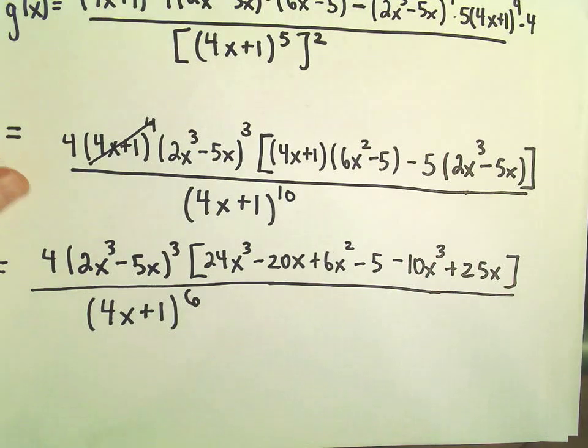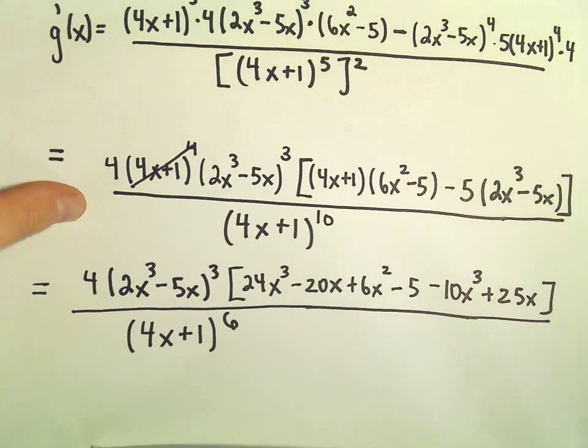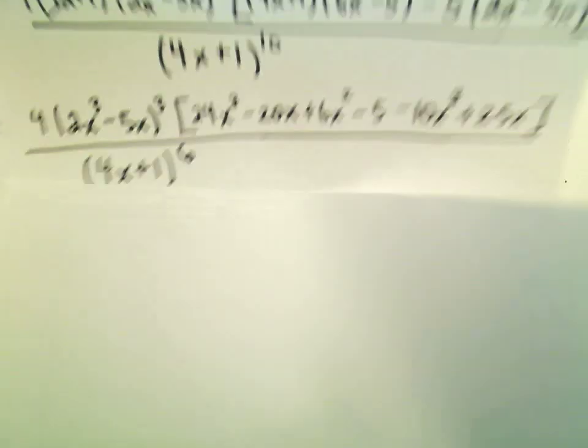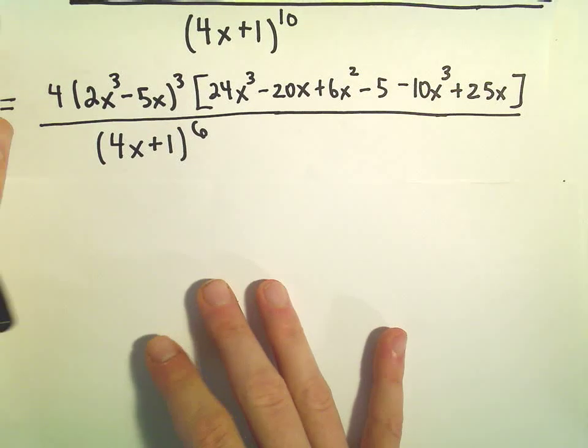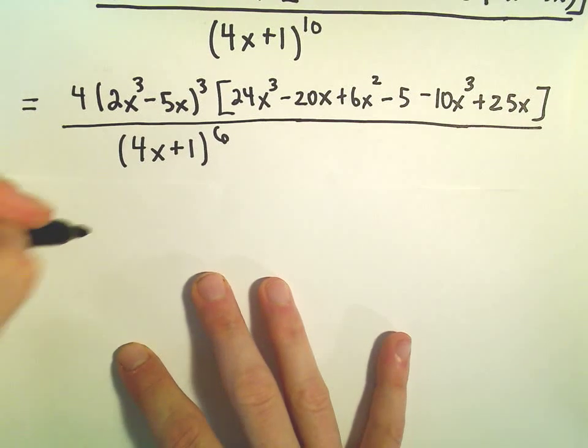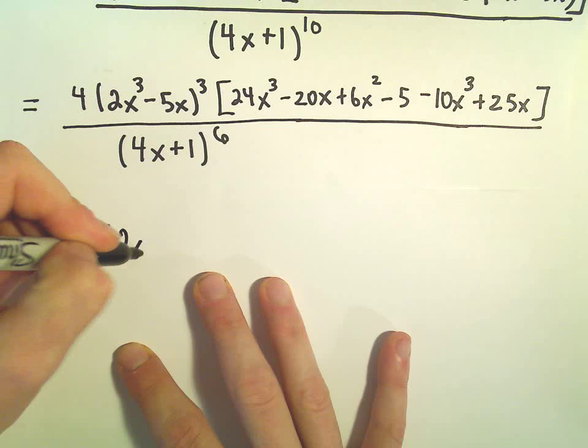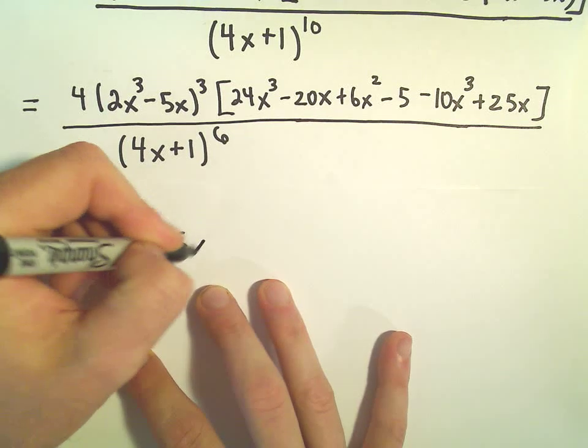And last but not least, all I'm going to do is just simplify what's in the brackets, combine my like terms, and then we will be finished. So we've got 4, 2x cubed minus 5x to the 3rd.